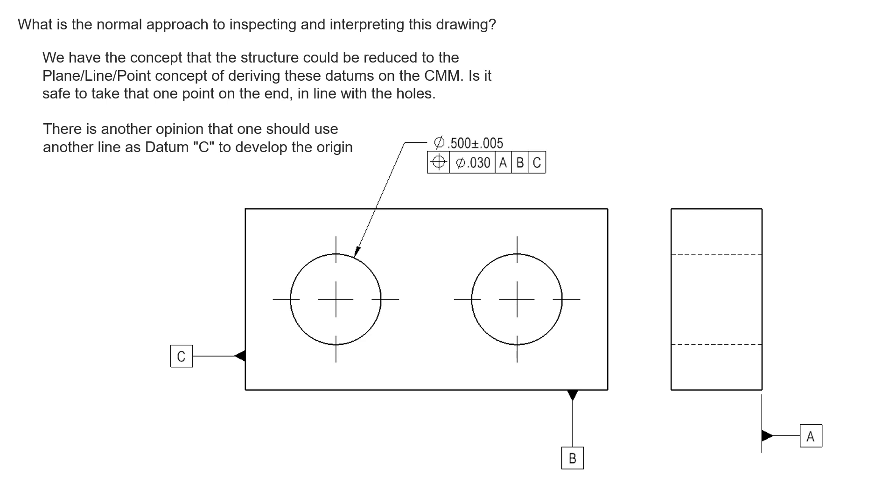This drawing was described to us in the question with additional commentary. We have the concept that the structure could be reduced to plane-line-point concept of deriving these datums on the CMM. Is it safe to take one point on the end in line with the holes?